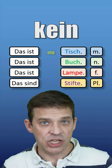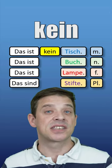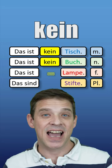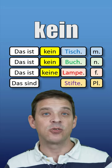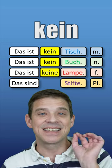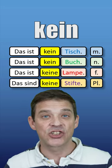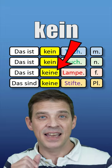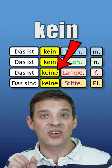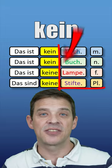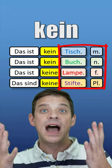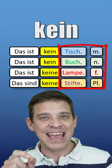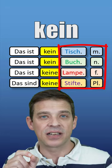Das ist kein Tisch, das ist kein Buch, das ist keine Lampe, und das sind keine Stifte. And as you can see, the ending of kein changes according to the gender of the noun. Why? Because kein is a negative article.